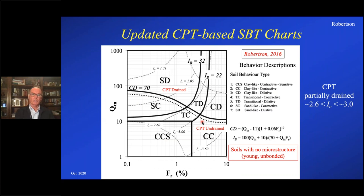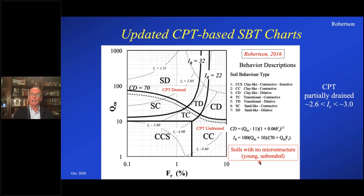All based on case histories, consistent with what Howard had suggested some years before. Recently, most of you are aware that I updated the soil behavior type charts to use more of a behavioral type description, recognizing that we call them soil behavior type charts because it's not exactly the same as the traditional soil classification. So now it has terms like sand-like and dilative, sand-like and contractive, clay-like dilative, and clay-like contractive. It has this boundary that's roughly that clean sand equivalent of 70, except I curved it over in the clay region to capture that clays with an OCR of about 4 or 5 is the boundary between dilative and contractive.